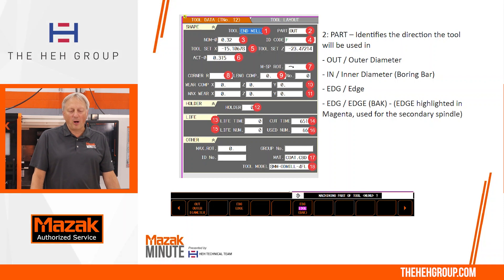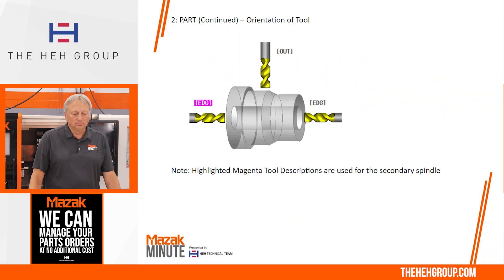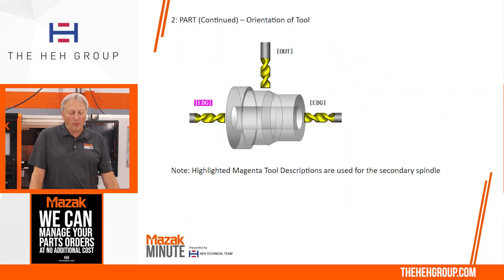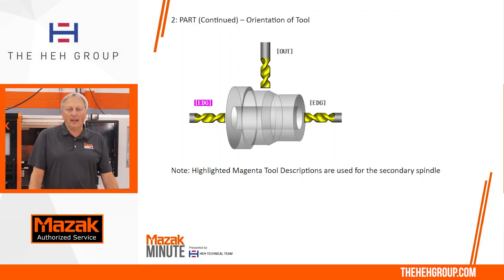Number two is a part that identifies the direction of the tool. Here you'll have part, out, edge, edge, back. For input support, the edge is going to be on the front face of the part, the out would be on the outside of the part, and the highlighted edge in magenta would be the milling tool for the second spindle.